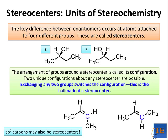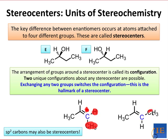Although you may not expect it, SP2 carbons may also be stereocenters, and in this case we have an example of trans-cis isomerism. When we switch the positions of the CH3 and the H off of this blue stereocenter here, we end up generating a diastereomer. Here's the trans compound where the CH3s are opposite the double bond, and here's the cis compound where the two CH3s are on the same side of the double bond.